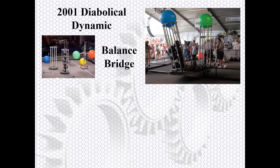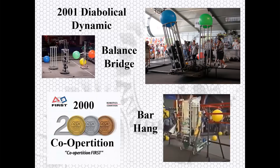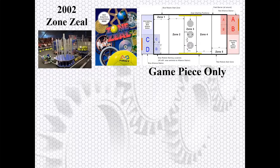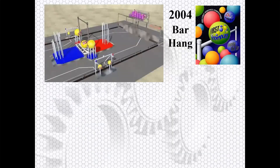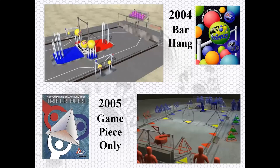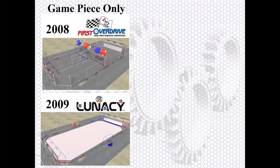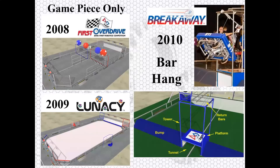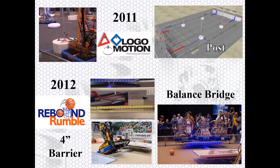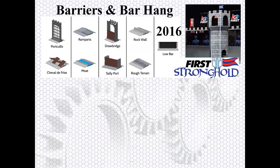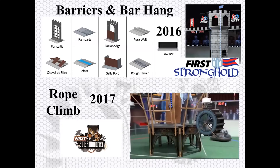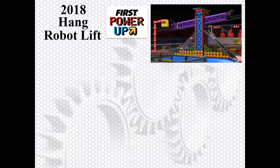What you see on screen is 2001 — a balance beam, exactly like what we had in Rebound Rumble. 2000 was the first time we had a bar hang. Here's another bar hang. 2007, Rack and Roll, that's a robot lift. 2010 Breakaway had a bar hang. 2011 we had to deploy a mini bot. Rebound Rumble had the balance bridge again, and then we had pyramids to climb. Stronghold was all field elements — the game piece was almost an afterthought. 2018 we had a hang and a lift, and 2020 Infinite Recharge, you'll be hanging one last time.